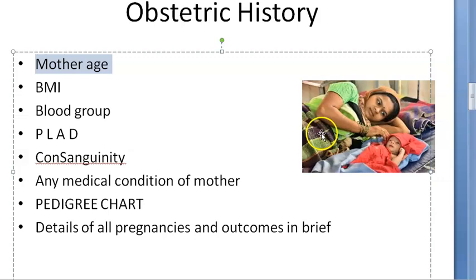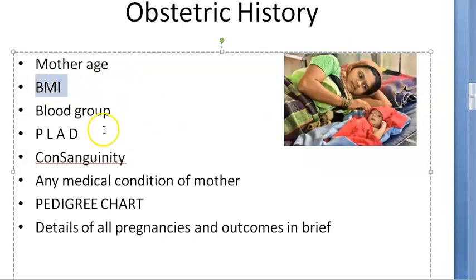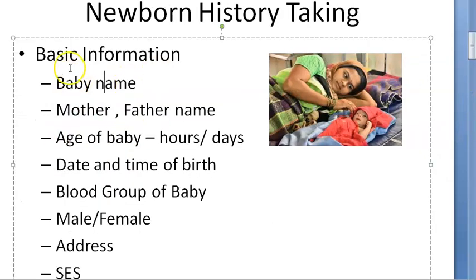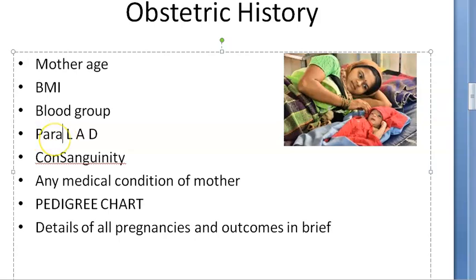Then if everything is fine, you can move on. Now you can go on to ask the mother about her obstetric history. So you can ask the mother's age, age of the mother, what is her height, weight, gather her BMI, do her BMI calculation, find out her blood group and the baby's blood group. So here in the basic information of baby we have added here the blood group of baby.